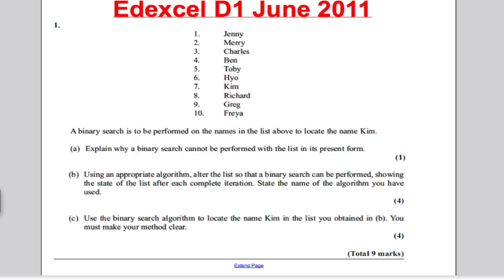Let's have a go at another question. This is the Edexcel June 2011 question. Pause the video, have a work through, mark your answers against mine. It gives us a list of names that a binary search is performed on the list above to locate Kim. Explain why a binary search cannot be performed in its current state. Well, currently they are not in alphabetical order. For a binary search, you need alphabetical order. So the answer to this is binary search will only work if in alphabetical order. So they're not in alphabetical order, so it won't work.